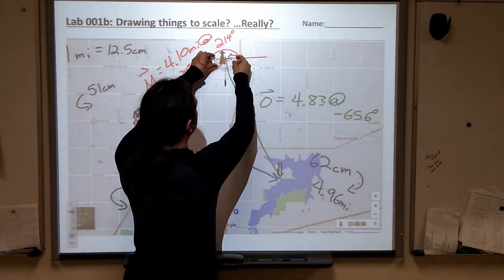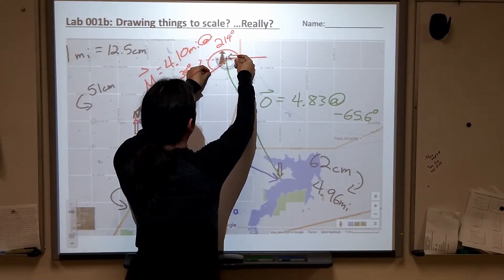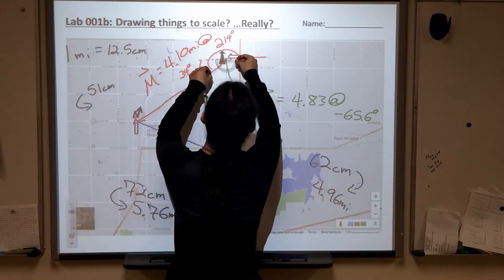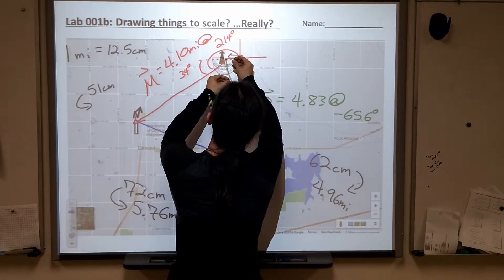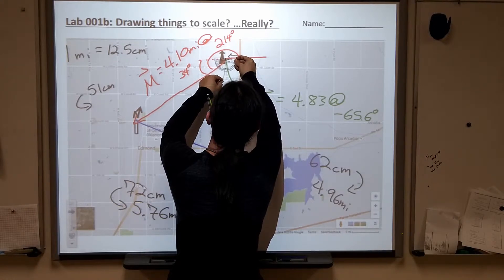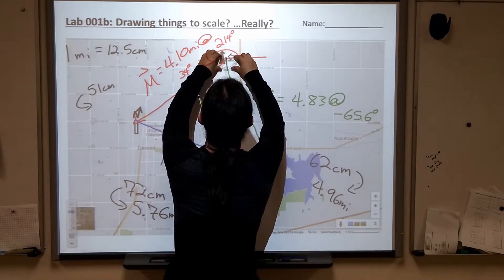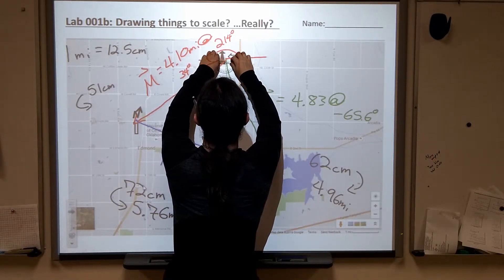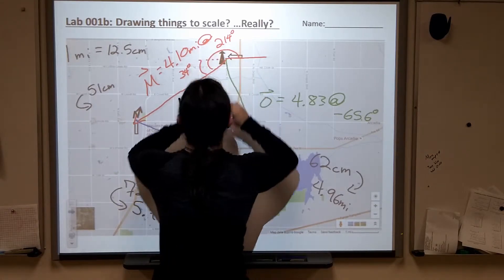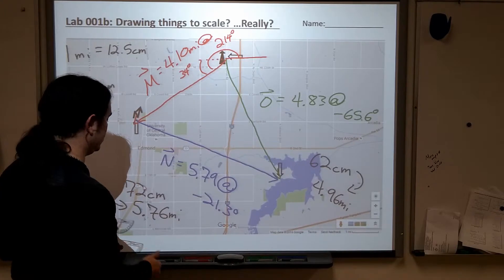If I then take this protractor and I put it up here, and I measure down along, trying to get this set up, part of the problem is, and I can't see that well here. There we go. That's a little better. Bring it down here. Kind of hard to see. Not my best drawing.